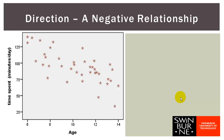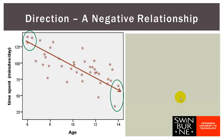Now let's look at another graph which shows a negative relationship. Here the younger children aged around six to seven were spending 130 to 140 minutes playing outside per day, whereas the older children — the 14 year olds — were spending only 30 to 60 minutes playing outside per day. So in this scatter plot we are seeing a negative relationship: the older children tend to spend less time playing outside, shown as a downward slope from left to right across the graph.